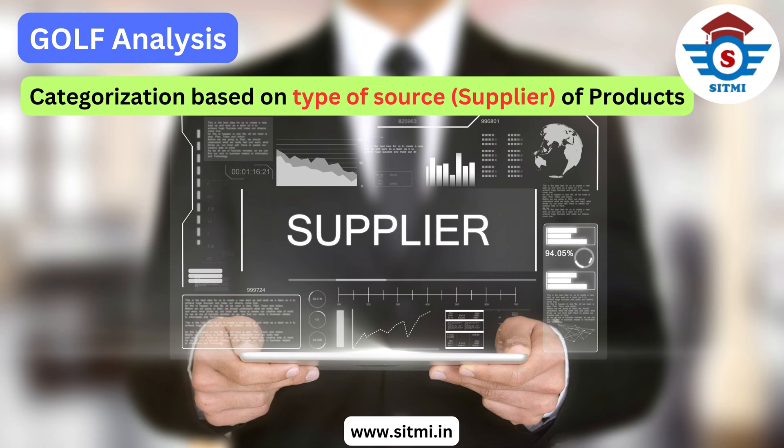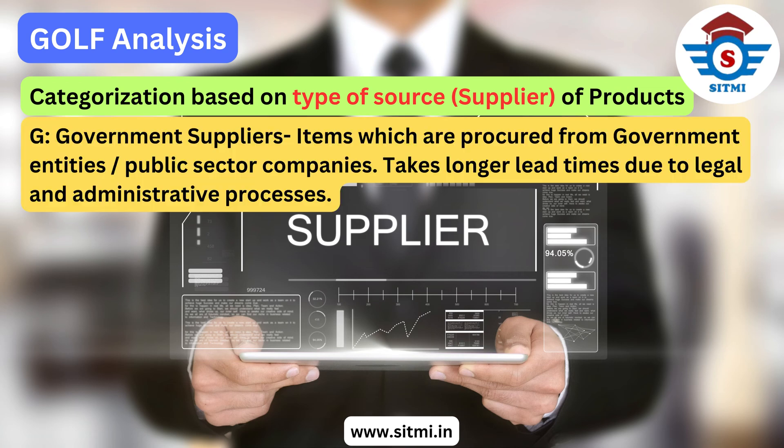The word GOLF defines four major types of suppliers. The first is G, which stands for government suppliers. In this category, items are procured from government entities, undertakings, or public sector companies. This type of purchasing usually takes longer lead times due to the requirement of legal and administrative processes.